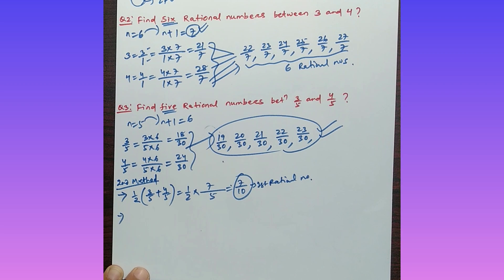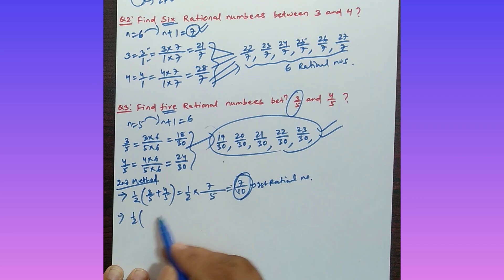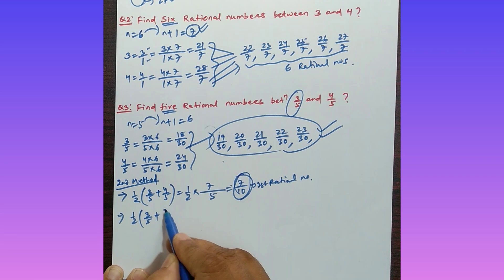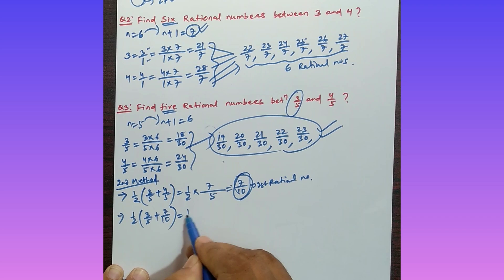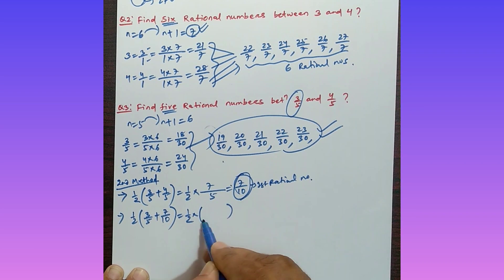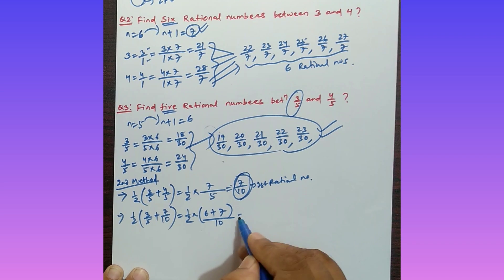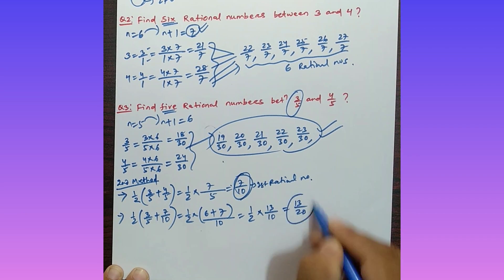For the second rational number, apply the same procedure between 3/5 and 7/10. Take (1/2) × (3/5 + 7/10). The LCM of 5 and 10 is 10, so (3/5 = 6/10): (1/2) × ((6 + 7)/10) = (1/2) × (13/10) = 13/20. So 13/20 is the second rational number.